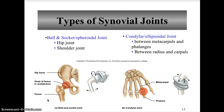The first type of synovial joint is the ball and socket joint. This is when the head of one bone articulates with the cup-shaped socket of another bone. It is seen in both the hip joint and the shoulder joint. Movement can occur in all planes including rotational movement, making ball and socket joints the most freely movable joints.